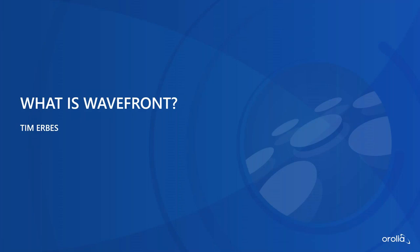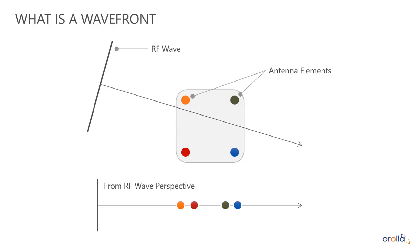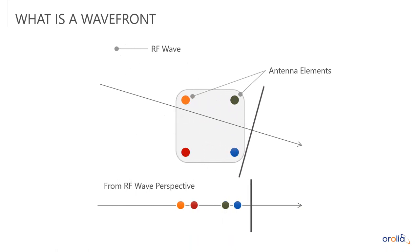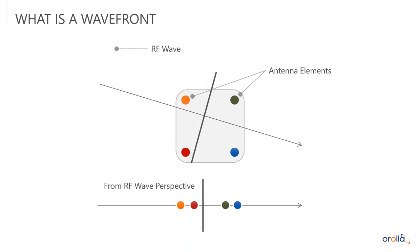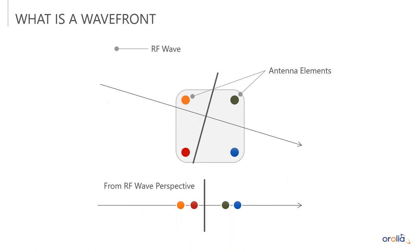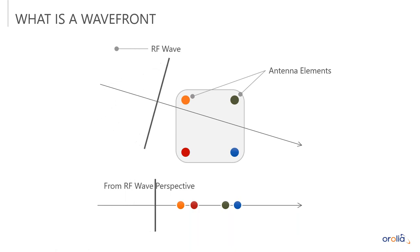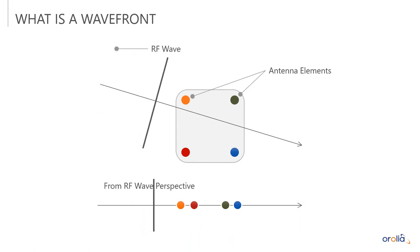You've heard me use the term wavefront — so what is a wavefront? When a signal from outer space arrives at an antenna location, it shows up as a flat wave. Depending on the angle of arrival, that RF wave is going to hit the different elements at different times. In a four-element antenna, the first element hit might be orange, then red, then green, then blue. The timing of the wave hitting these elements is very critical to have a valid simulation — any small error in the simulation would break down the signal environment such that it is no longer a valid test.